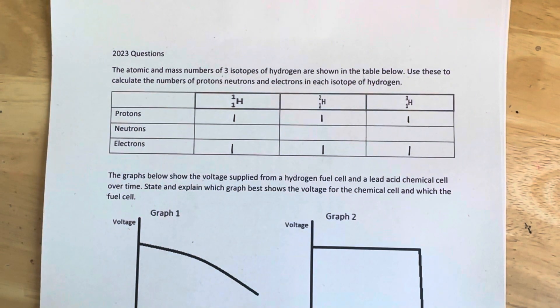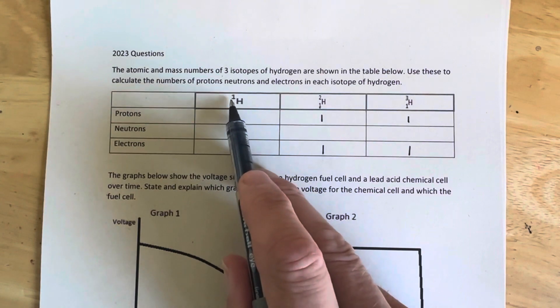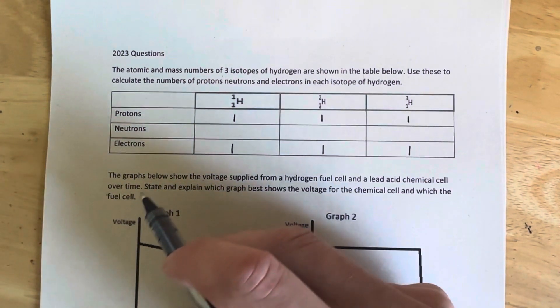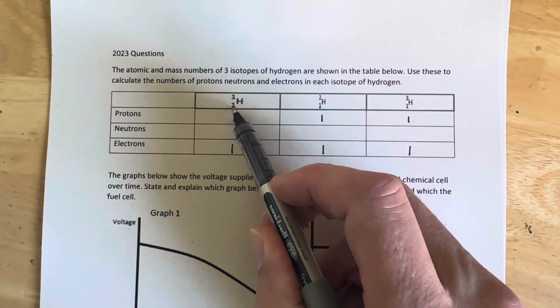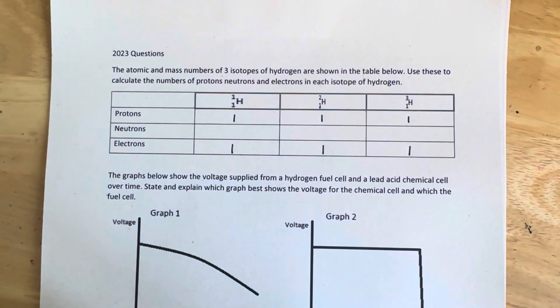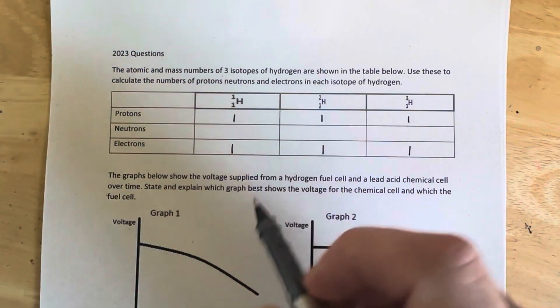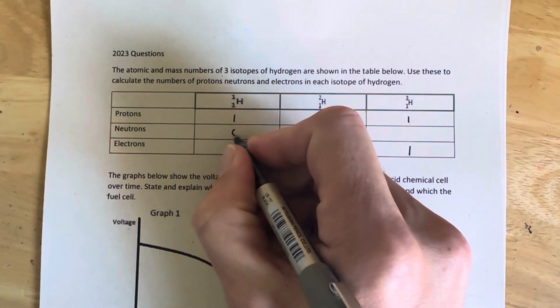Isotopes have a different number of neutrons. So the mass number is different in each one: one, two, and three. To calculate the neutron number, we subtract the proton number, the atomic number, from the mass number, because protons and neutrons each have a mass of one. So one minus one is zero. So there are no neutrons in that one there.